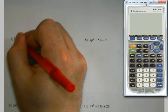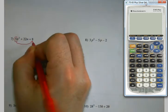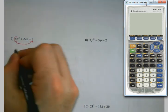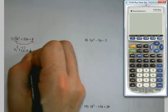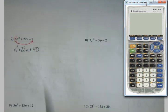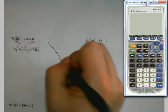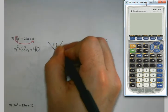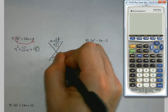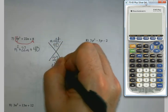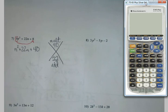n squared, 22n, and 40. Let's see here. Multiply to 40, add to 22.